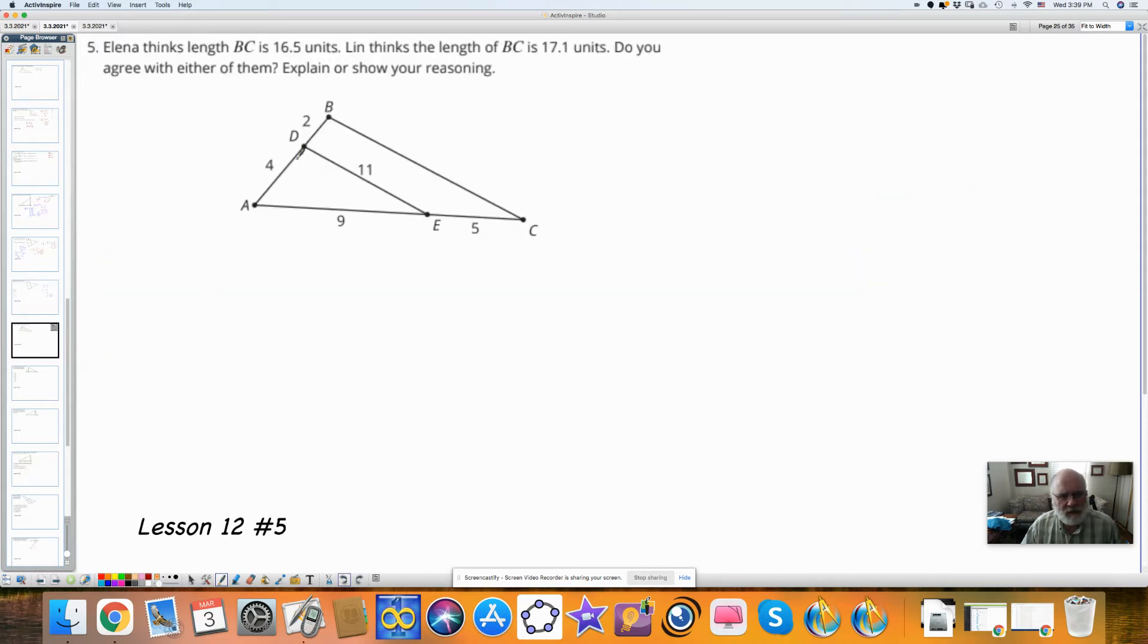Elena thinks that BC is 16.5. Lynn thinks that the length of BC is 17.1. Do you agree with either of them? I don't. Because I don't know how long it's going to be.